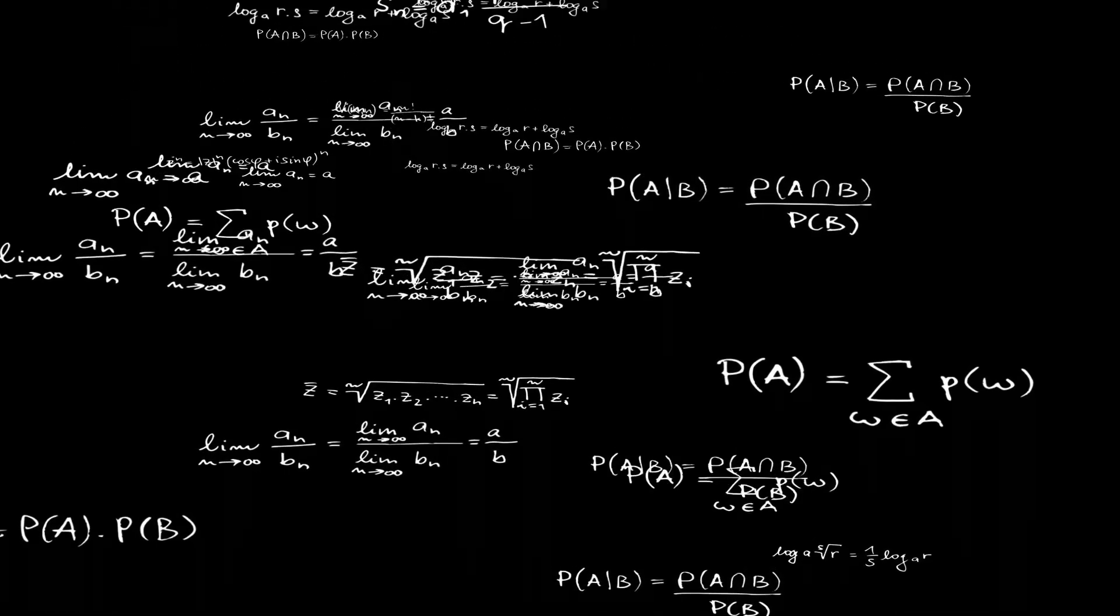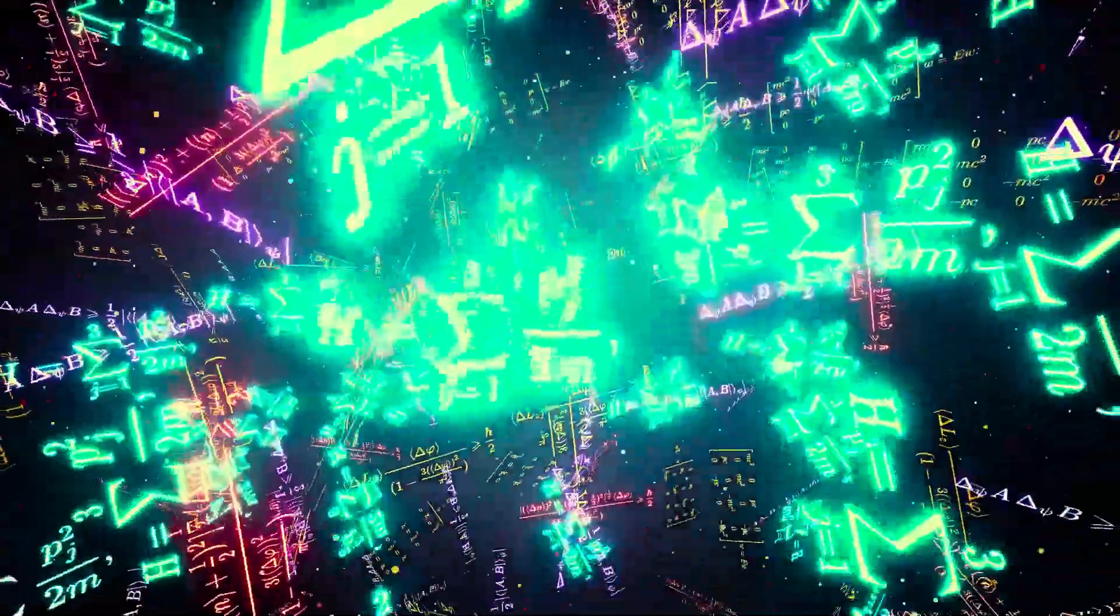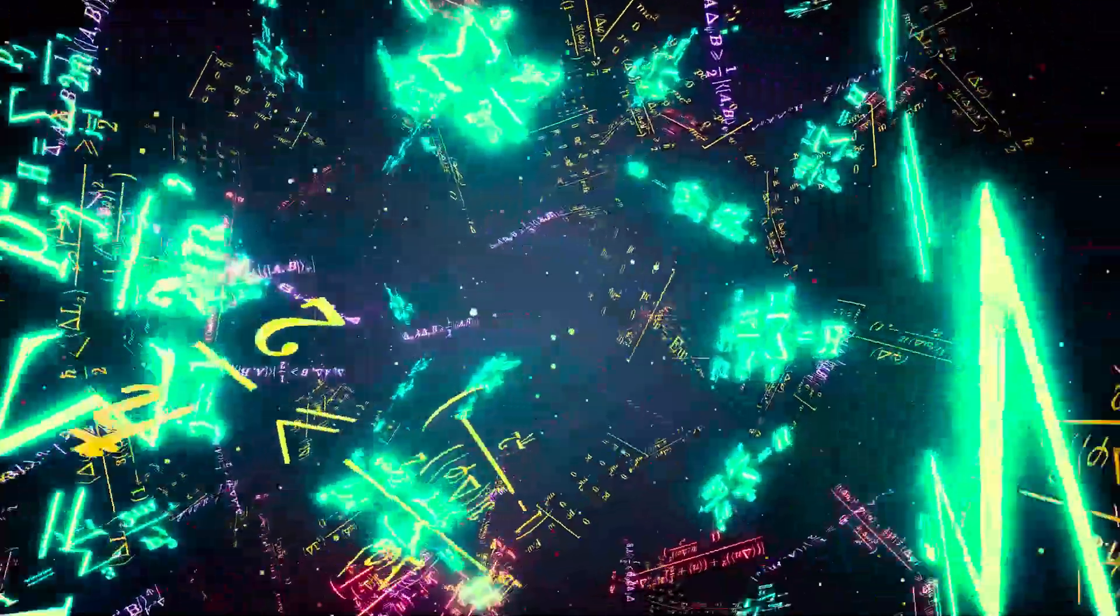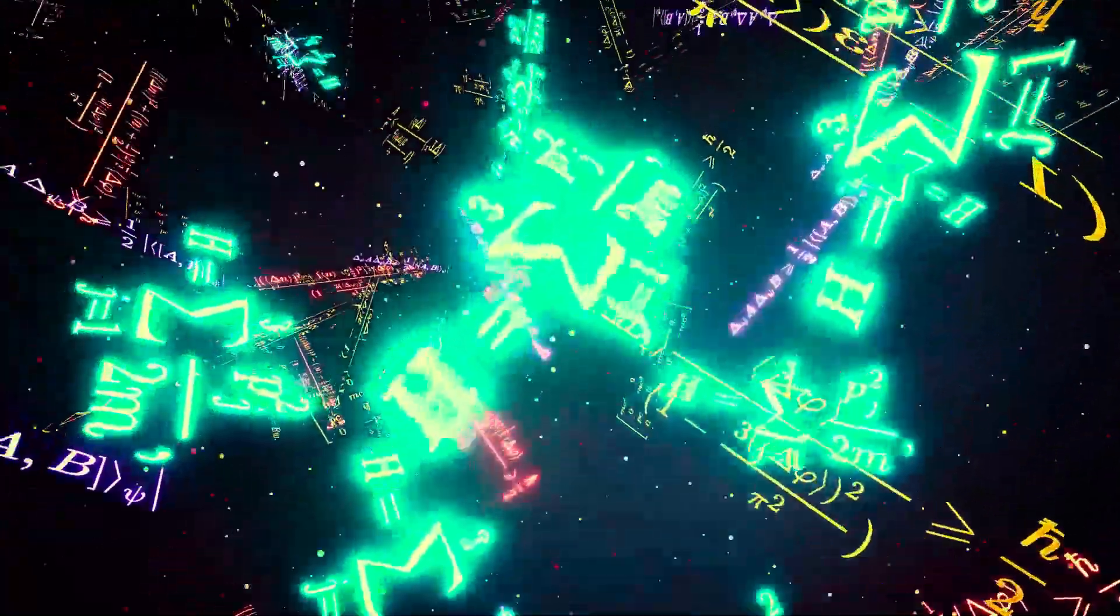The Dirac equation. Predicting antimatter. The Dirac equation, developed by Paul Dirac, is a groundbreaking mathematical formula that successfully predicts the existence of antimatter.